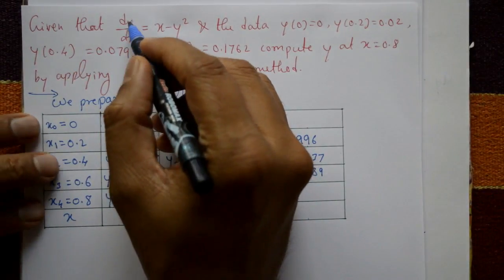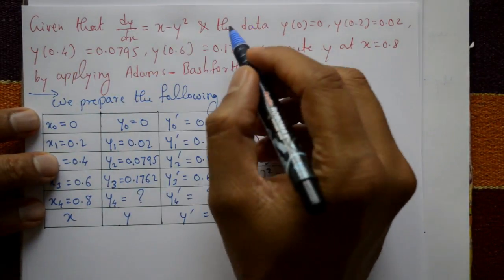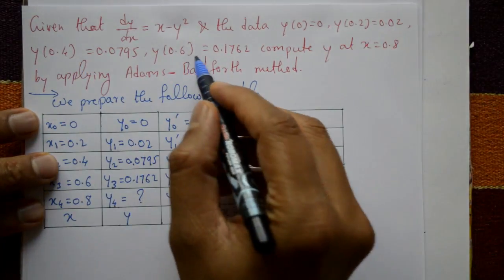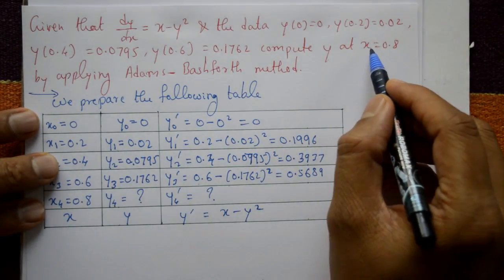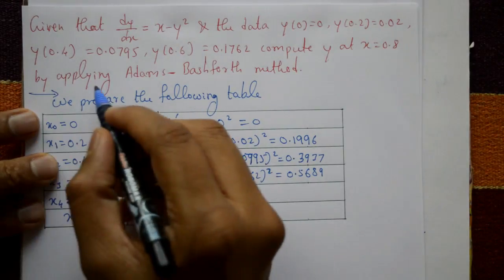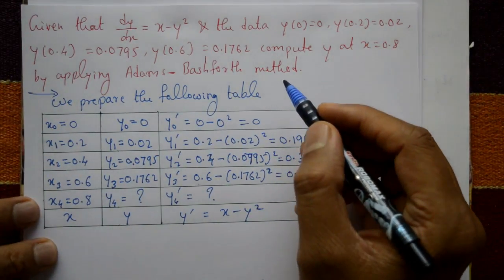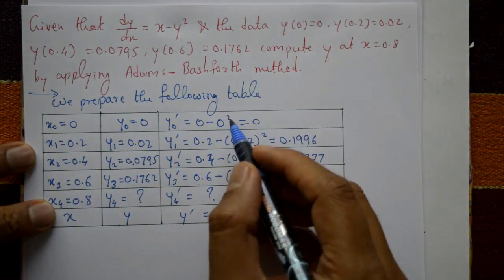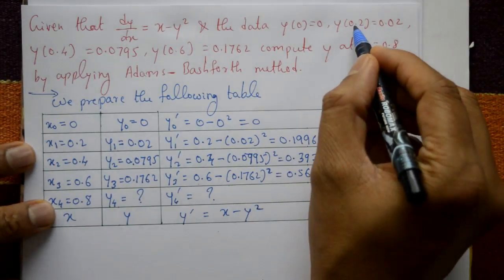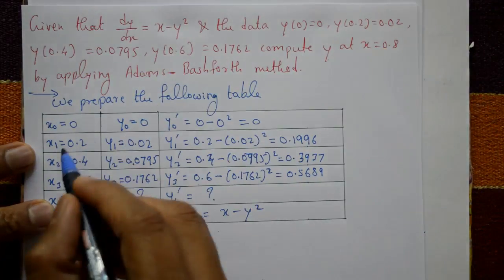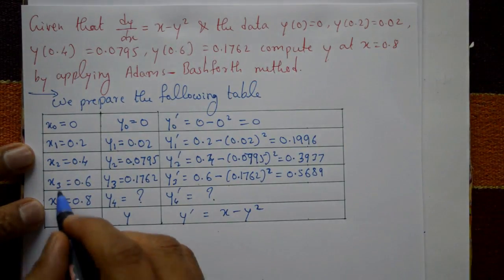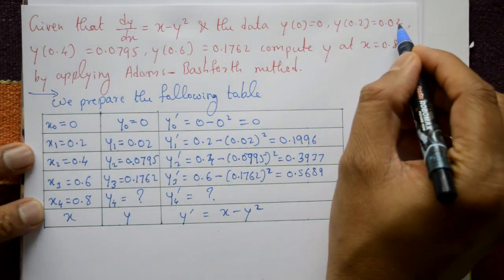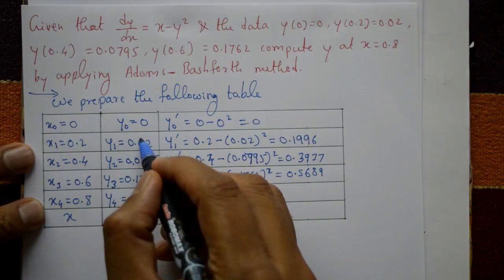Given that the first order, first degree differential equation dy/dx is equal to x minus y squared, and the data values are given, compute y at x equal to 0.8 by applying Adam's-Bashforth method. First, we prepare the following table with x values: x₀, x₁, x₂, x₃, x₄, and their corresponding y values.